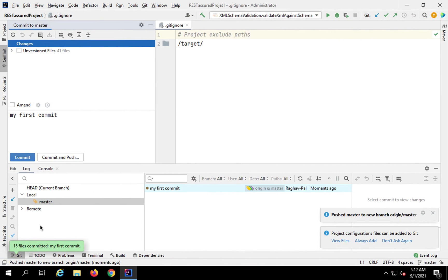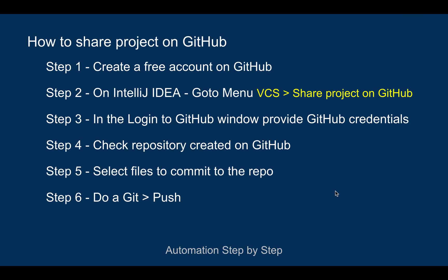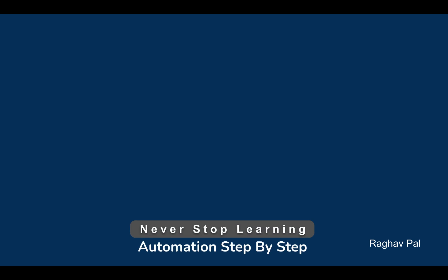If I now refresh my repository, you can see all the data has come through — all the files are here. My project is now added to a repository on GitHub. Whenever I make any changes, I can select the files to commit and then do a commit and push. This is how you can share and add a project to a GitHub repository from IntelliJ. I hope this was useful — please do hands-on practice, and if you have any issues or questions let me know. Thank you for watching, and never stop learning.